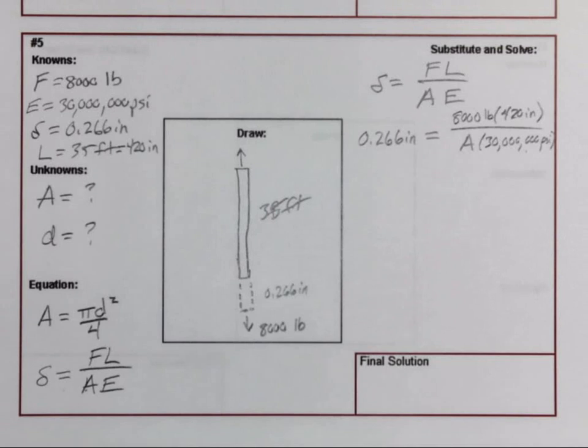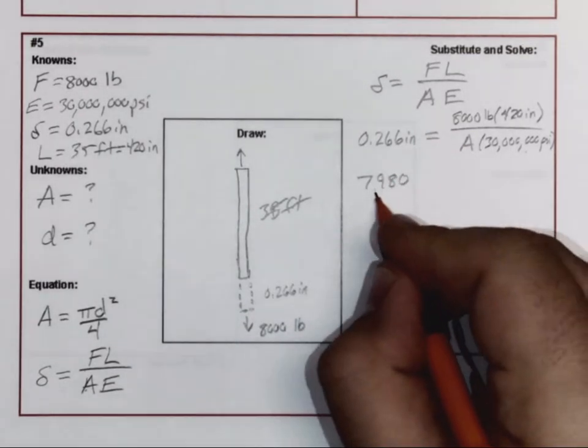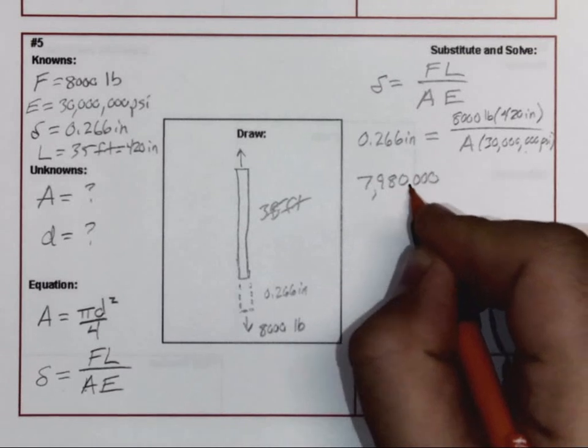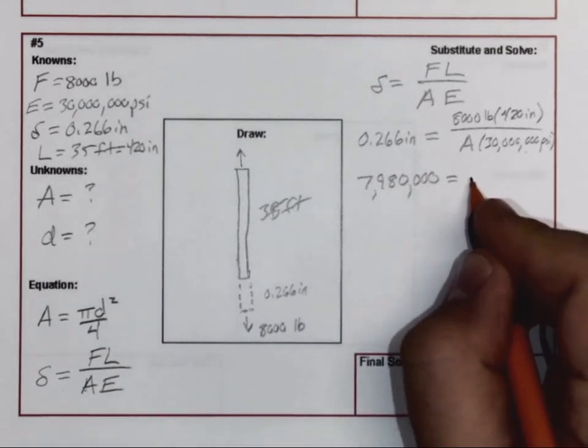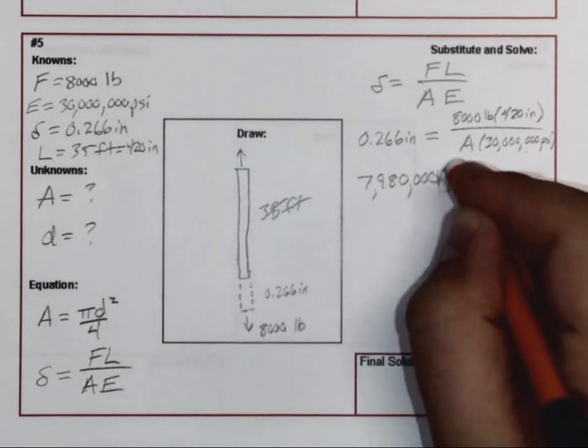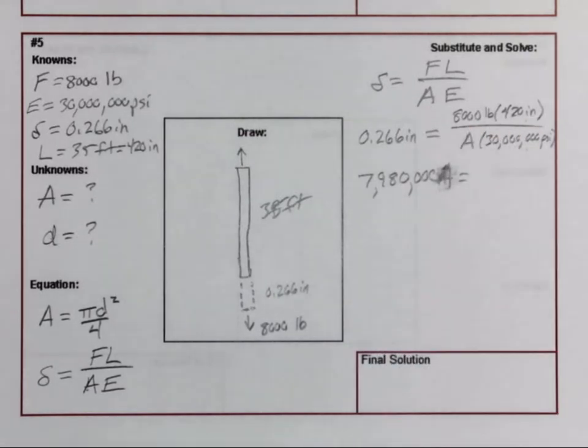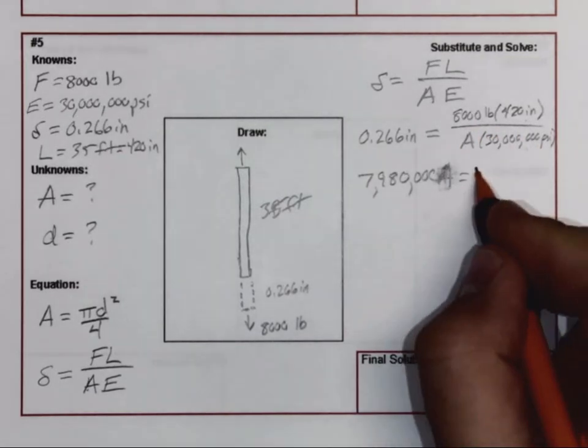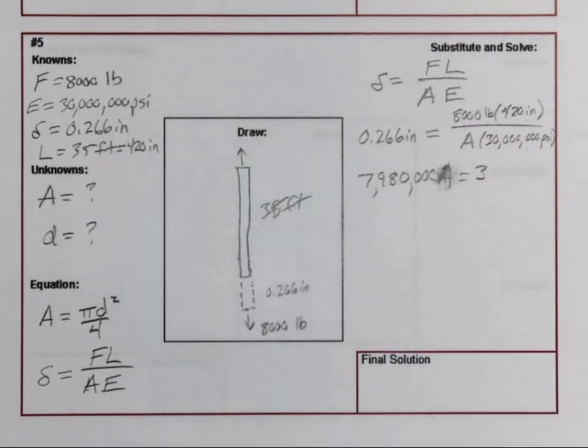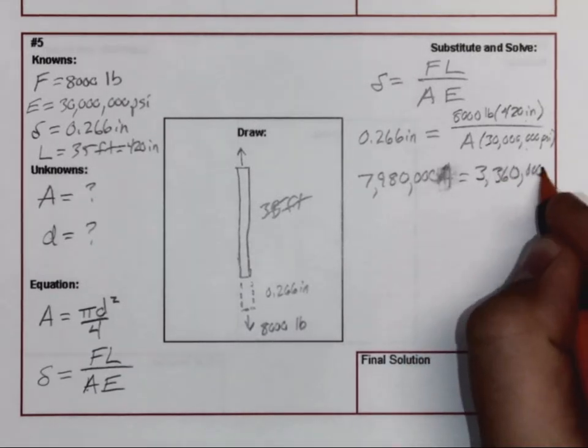In terms of how this works, you're going to have to take 30,000,000 times A and multiply it by this case. So 30,000,000 times 0.266 is going to give me 7,980,000, and that's equal to... of course I've got to have my A variable in there, but I forgot that.